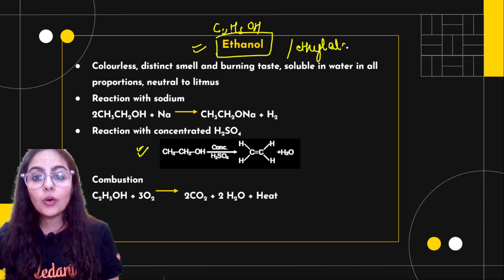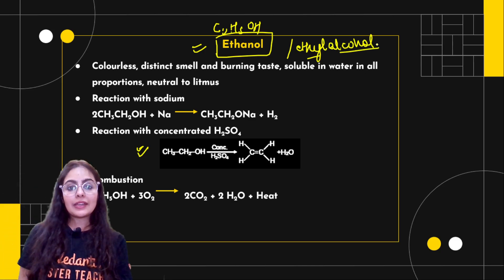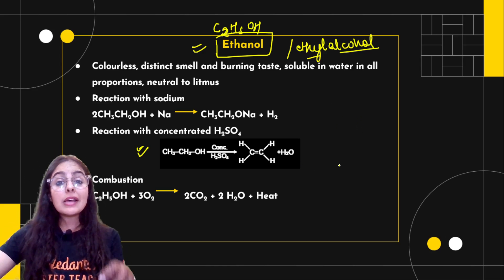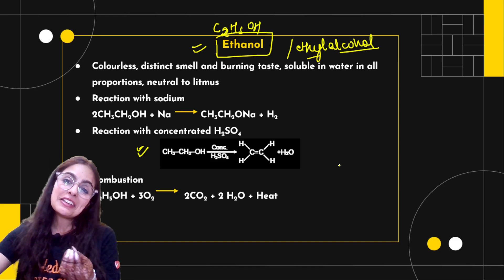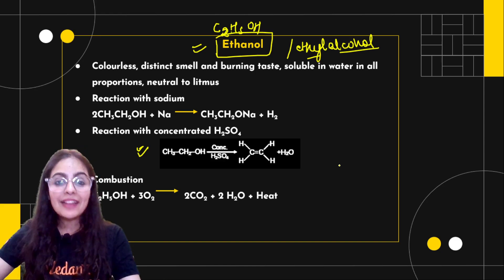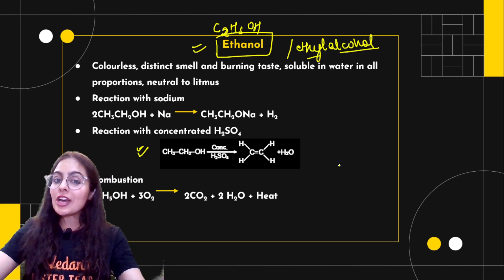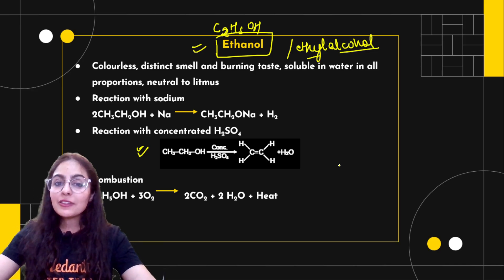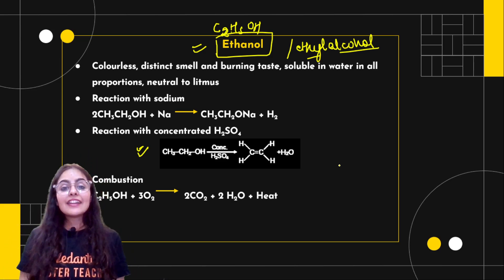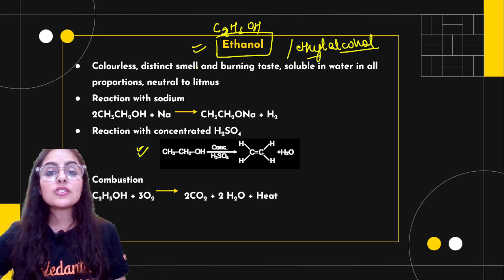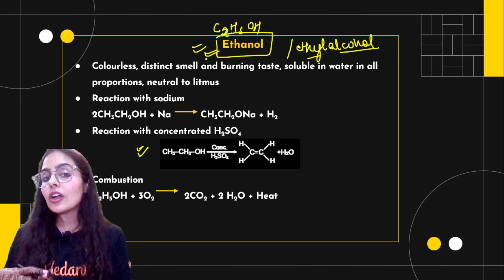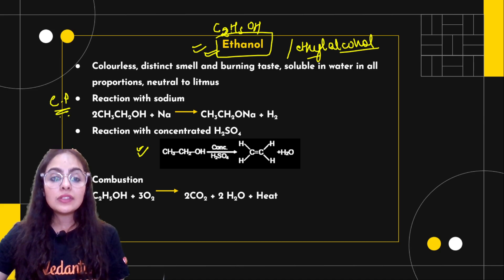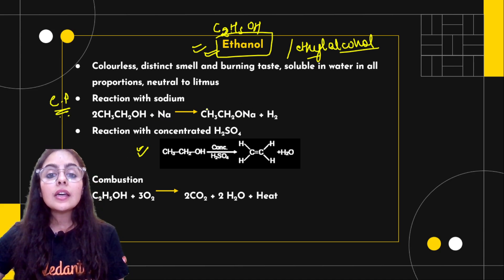Ethanol (C2H5OH) is colourless with a pleasant smell and a burning taste. It is soluble in water in any proportion. Ethanol is neutral to litmus — meaning it is neither acidic nor basic. Now for the chemical properties of ethanol: ethanol reacts with sodium metal to form sodium ethoxide plus hydrogen gas. In the presence of concentrated acid, a dehydration reaction occurs.